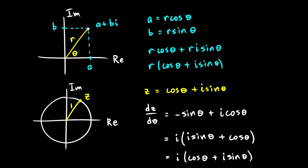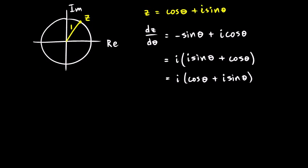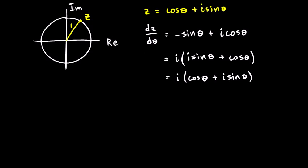Now look at that. Cosine theta plus i sine theta is exactly that, is z. That's our original number. So this is i times z. So we get dz/dθ is equal to dz/dθ is equal to i times z. How about that?